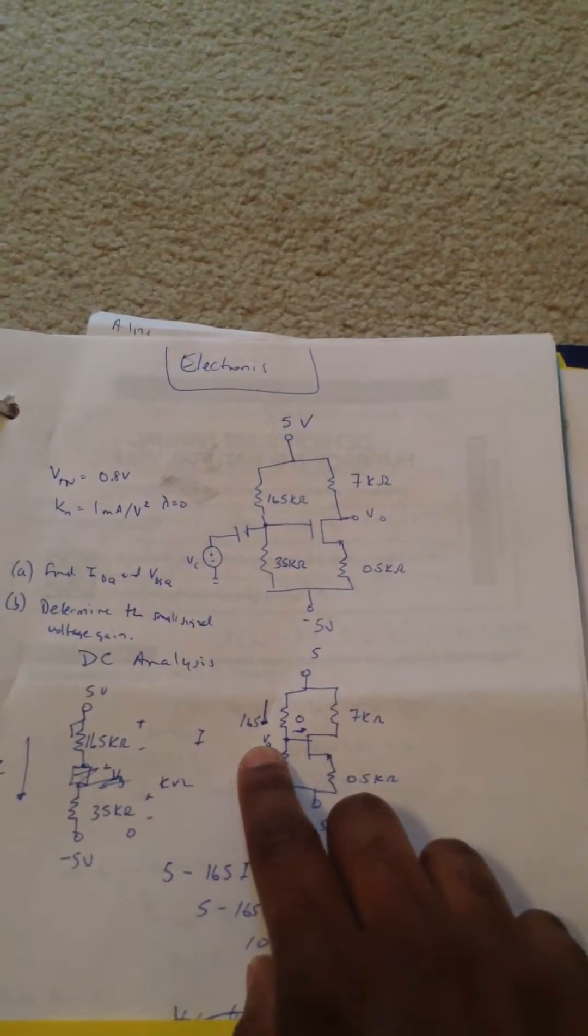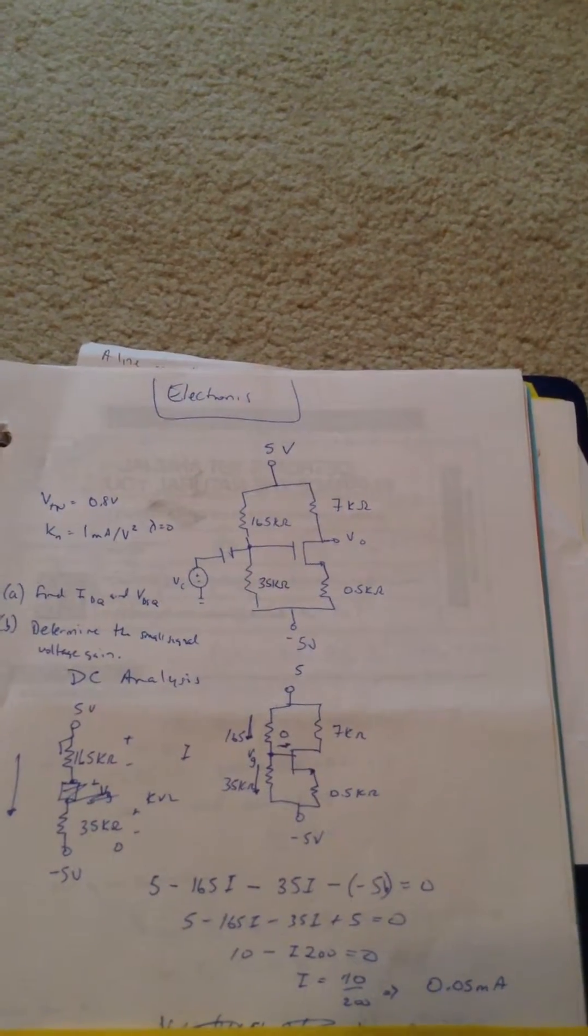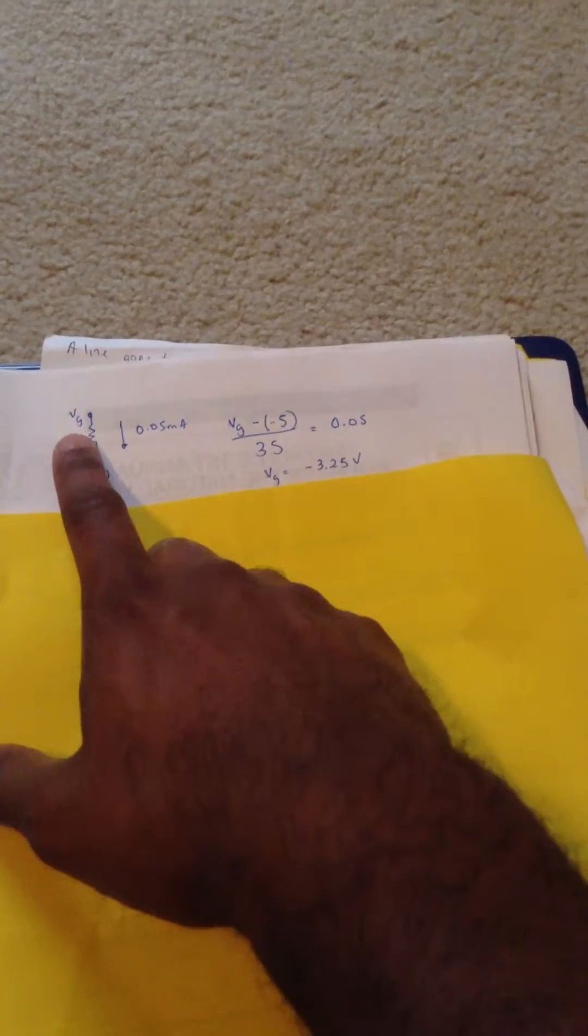Now that we have that, we can solve for VG, which is just going to be taking the bottom half of that leg. So we're going to use KCL now to solve for VG.